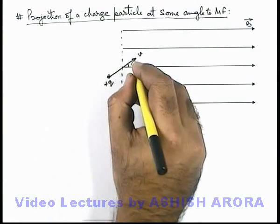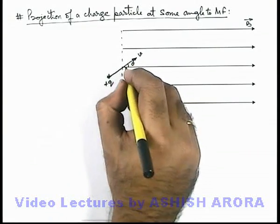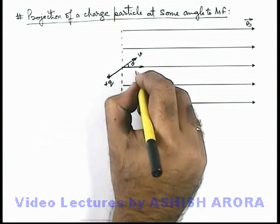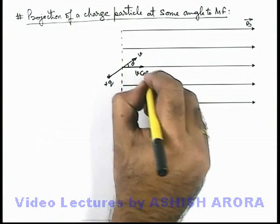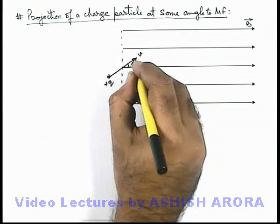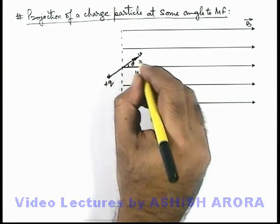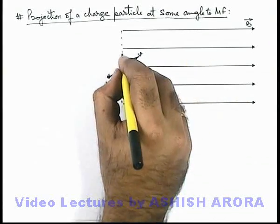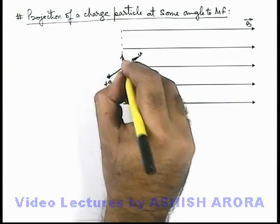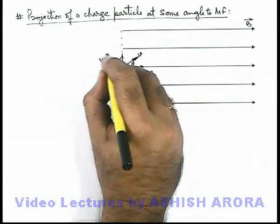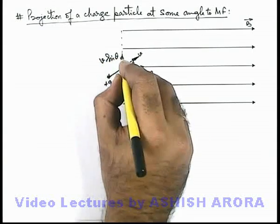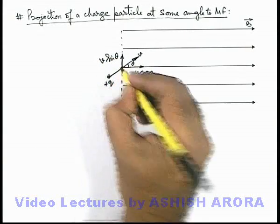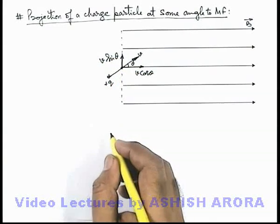In this situation we can directly state: a component of velocity which is v cos theta will be parallel to the direction of magnetic induction, and another component v sin theta will be perpendicular to the direction of magnetic induction.